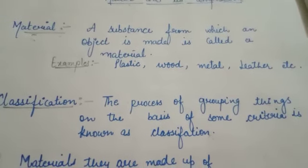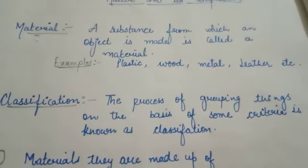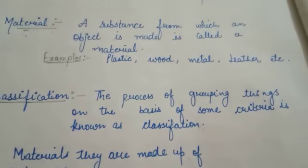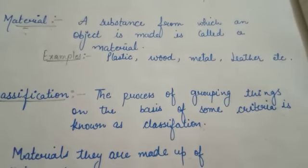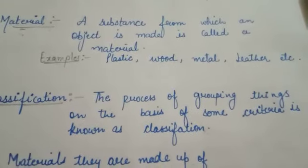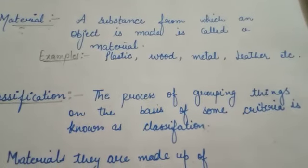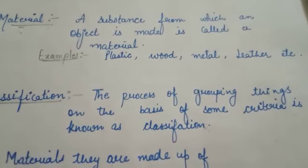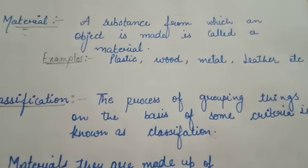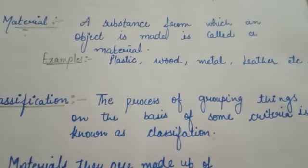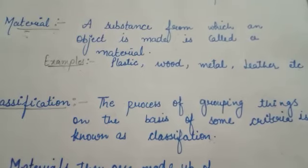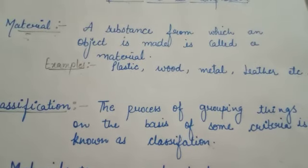Next is classification. The process of grouping things on the basis of some criteria is known as classification. Means ki hum kuch properties leke unko fix kar dete hai aur unke basis pe things ki grouping kar dete hai — and that process is known as classification.